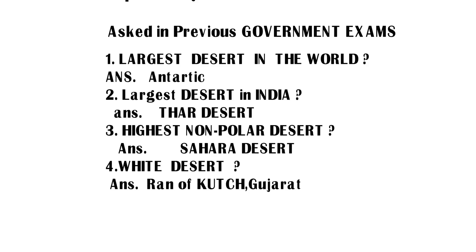The third question: highest non-polar desert — the answer is Sahara Desert. The fourth question: which desert is called the White Desert? The answer is Rann of Kutch, which is in Gujarat.